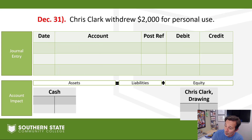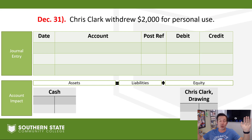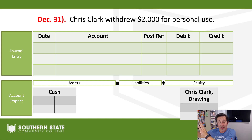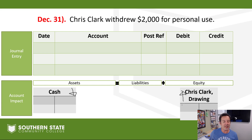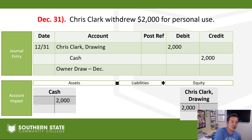Our final transaction — the owner, after all that work in December, is going to take out $2,000. We've seen this transaction before. Cash comes down, and drawing is kind of like an expense account — it goes up on the debit side with a normal debit balance. So: Chris Clark drawing debit $2,000, cash credit $2,000.